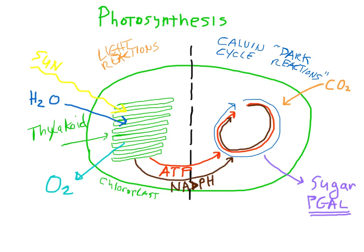After ATP drops off its energy in its third phosphate group, it turns into ADP. It has to be recycled back into the light reactions to be re-energized. The same basic idea holds true for the other energy carrier, NADPH — it drops off its energy and becomes NADP+, and it too gets recycled and re-charged in the light reactions.